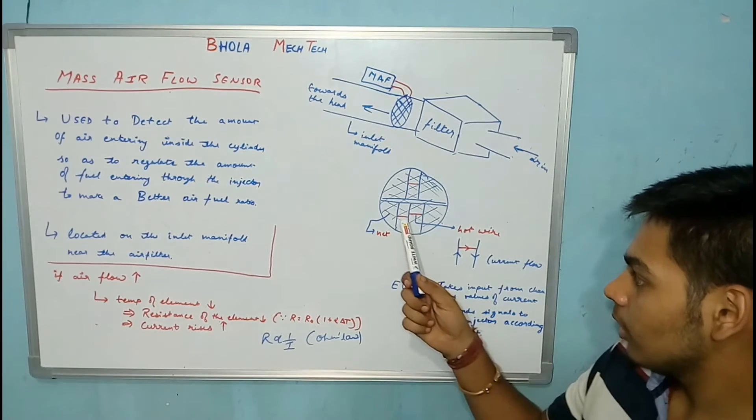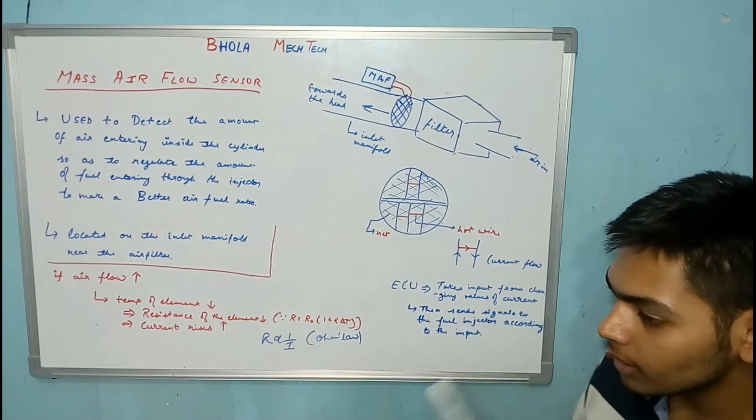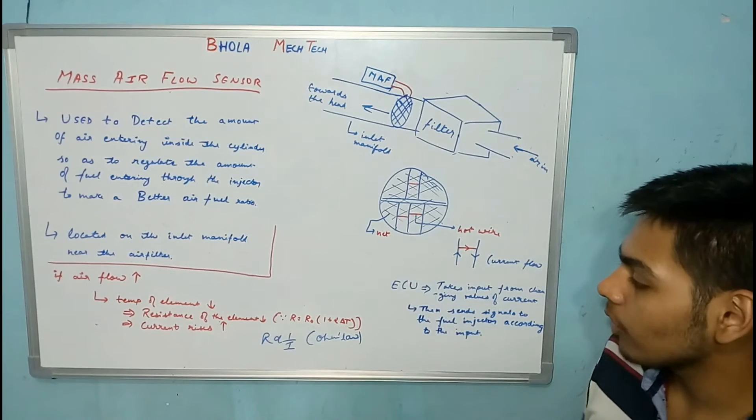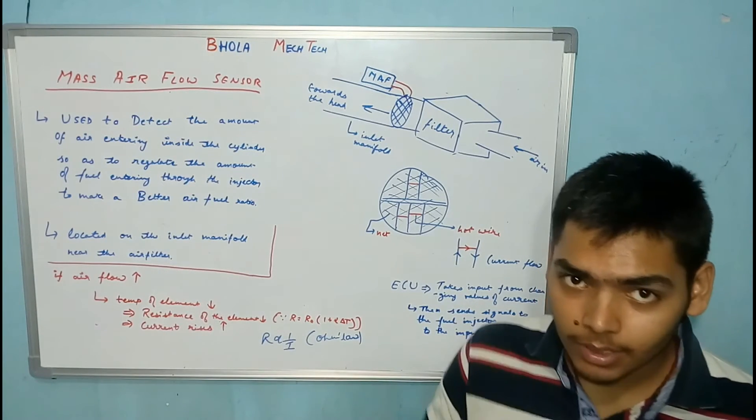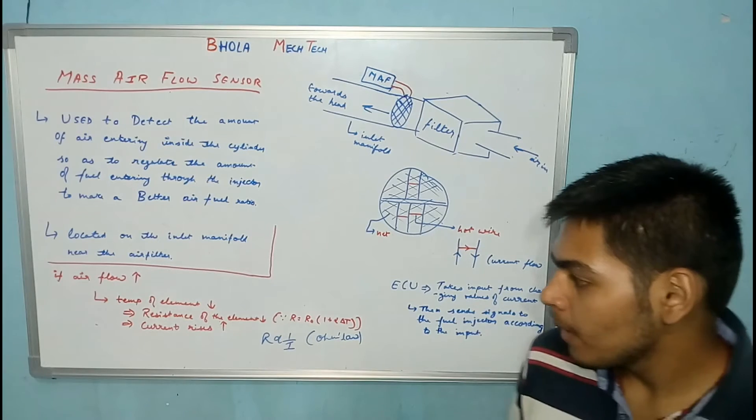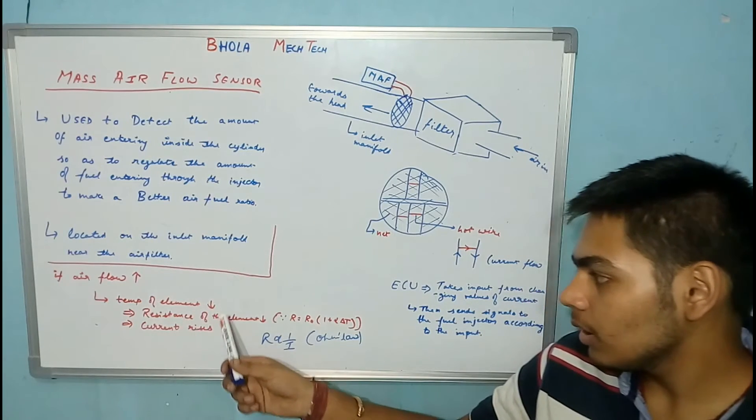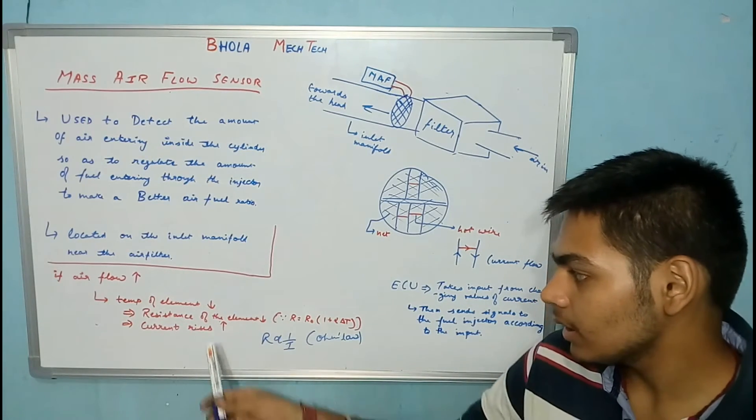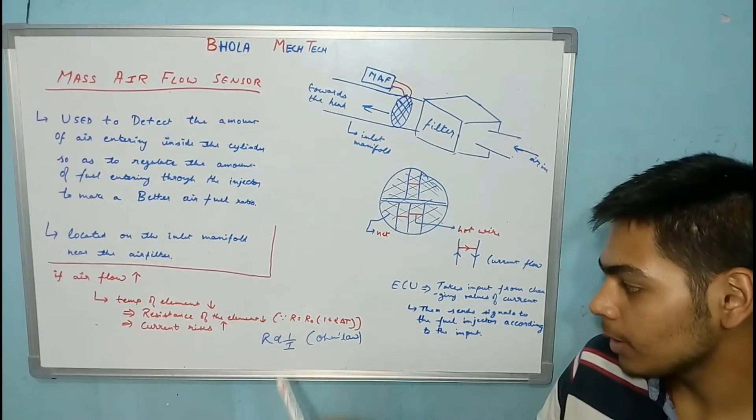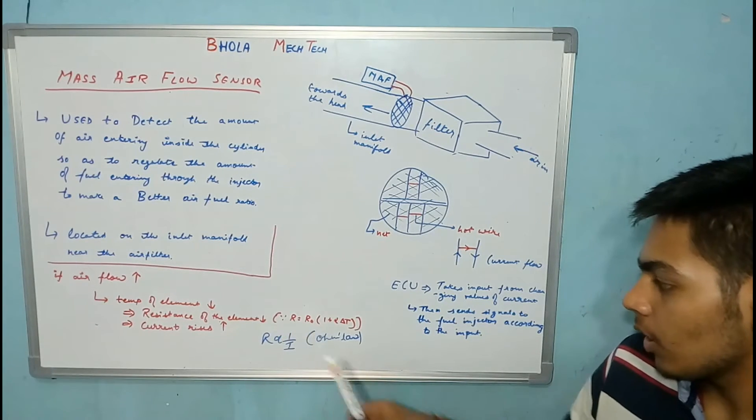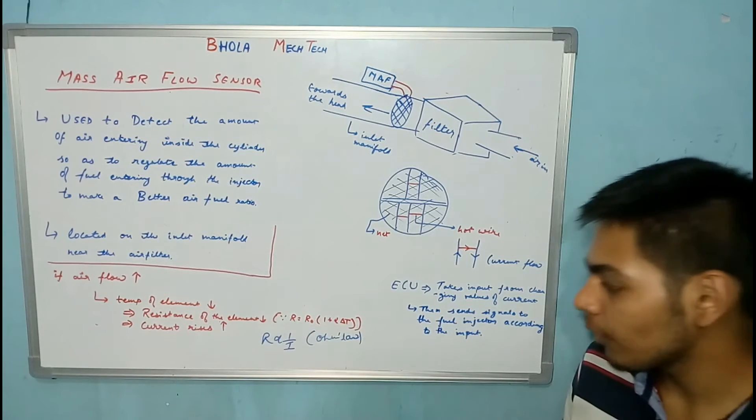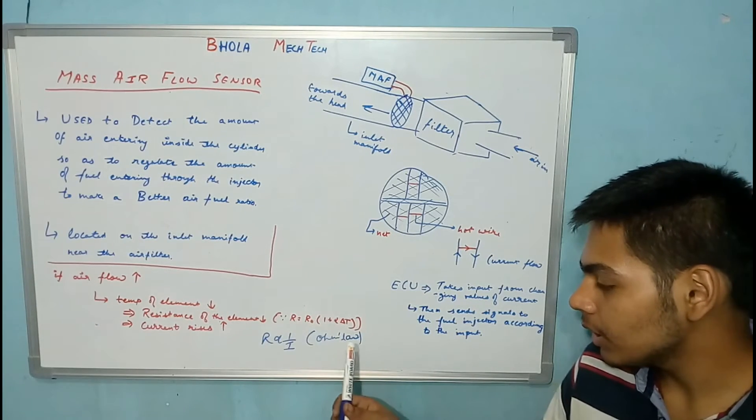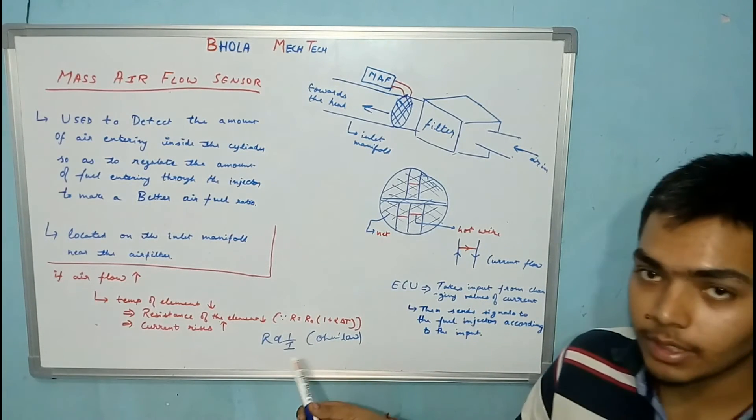Due to high temperature, when air starts flowing through these hot wires, the temperature of the element starts decreasing due to the flow of air. Since the temperature of the element decreases, resistance of the element also decreases. As per the relation R = R0 + R0(1 + αT), this is the relation of resistance and temperature.